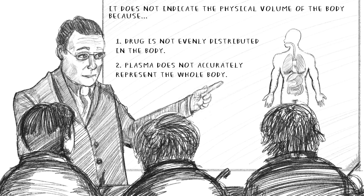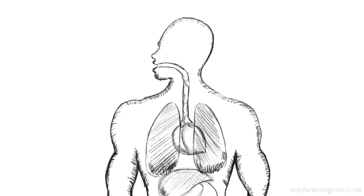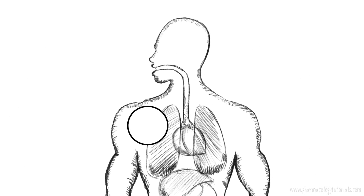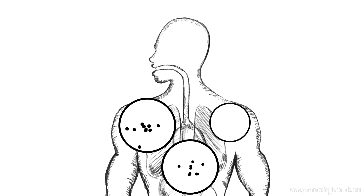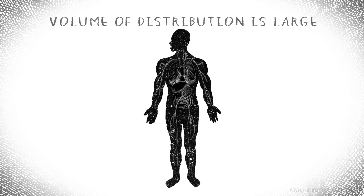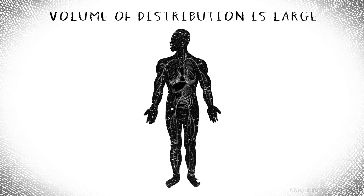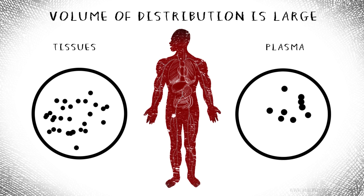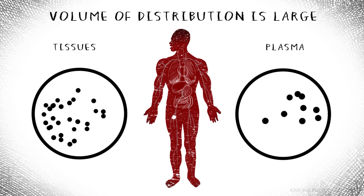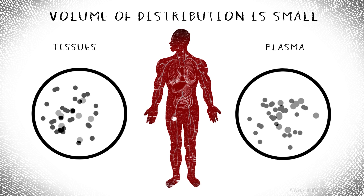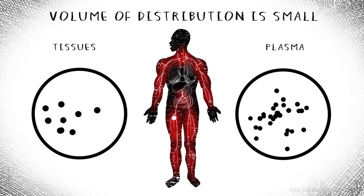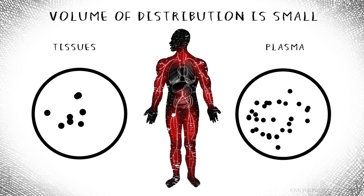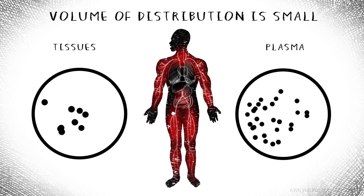This is clearly not true, as the drug will distribute differentially into cells, tissues, and organs. Thus, the volume of distribution will be large if the drug has a higher affinity for tissues than plasma. Conversely, the volume of distribution will be small if the drug has a higher affinity for plasma than tissues.